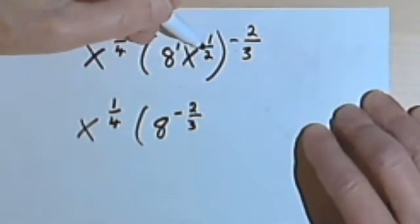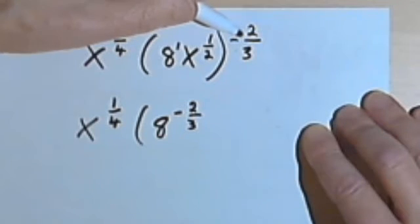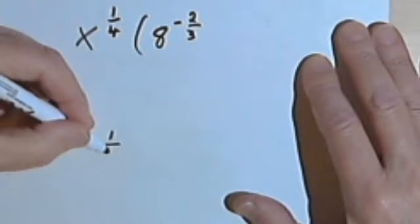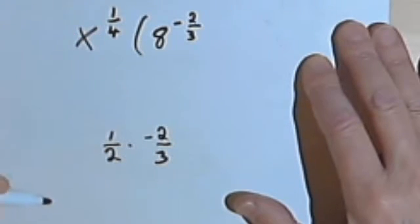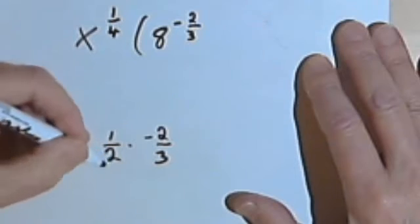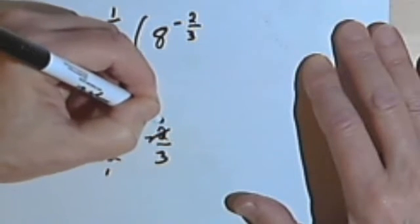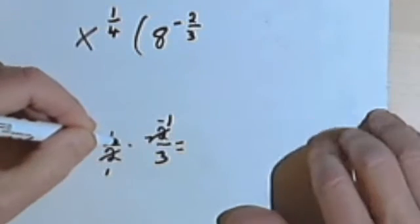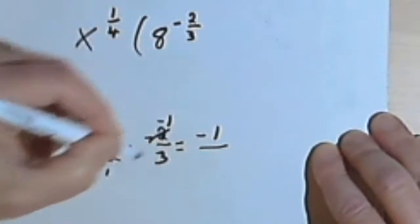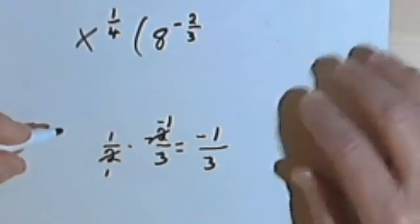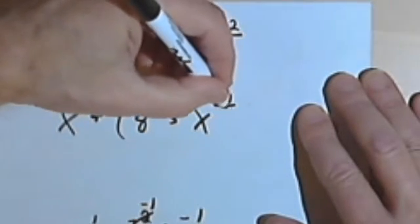Then I've got x to the one-half and I have to raise that to the negative two-thirds, so I'm going to multiply one-half times negative two-thirds. I've got a 2 in the denominator and a 2 in the numerator, so I can cross those out, keeping the negative sign. So the 2s cancel to 1s — the negative 2 becomes negative 1. Multiplying across the numerators: 1 times negative 1 is negative 1, and 1 times 3 is 3. So that means I'm going to have x to the negative one-third.